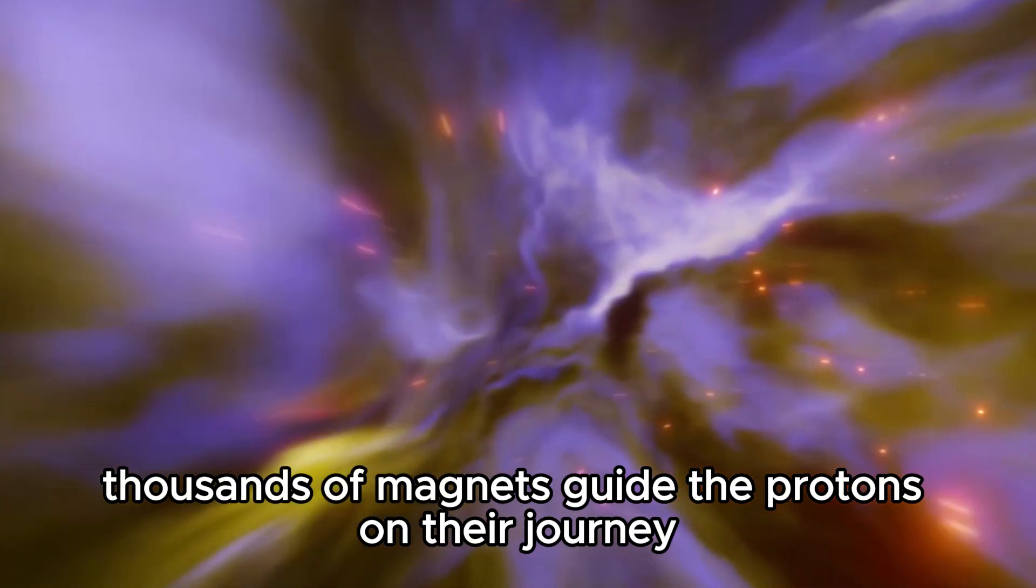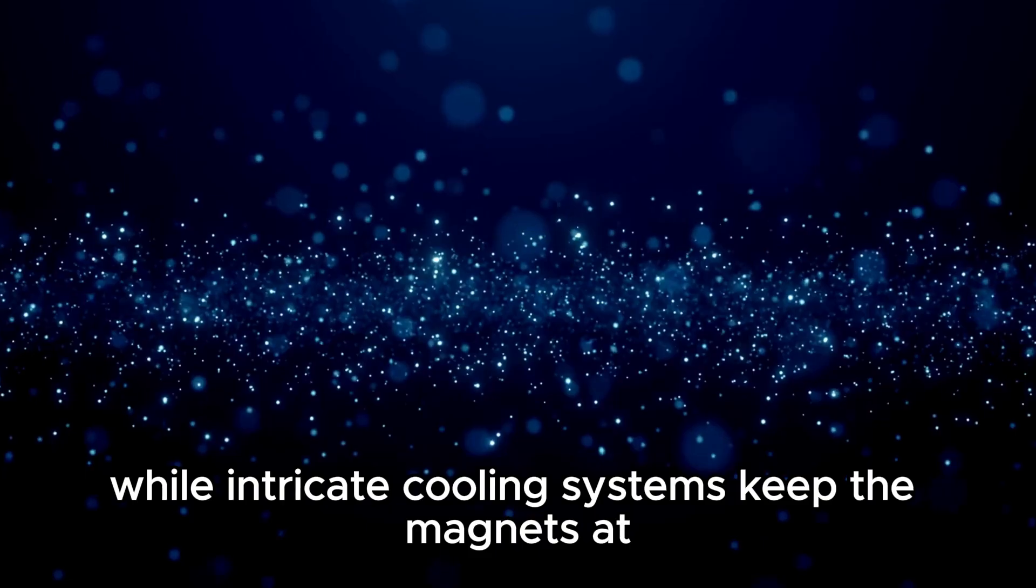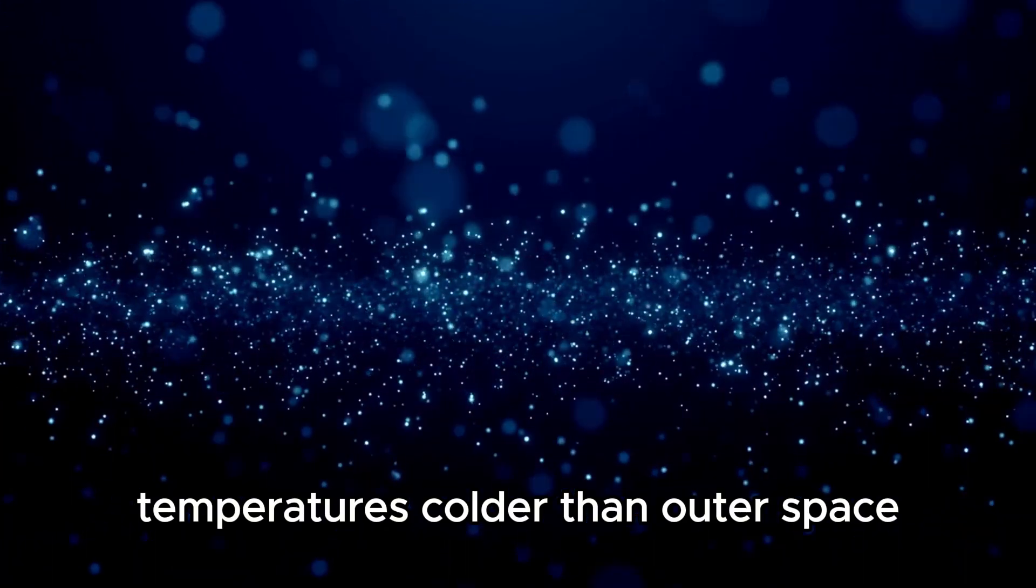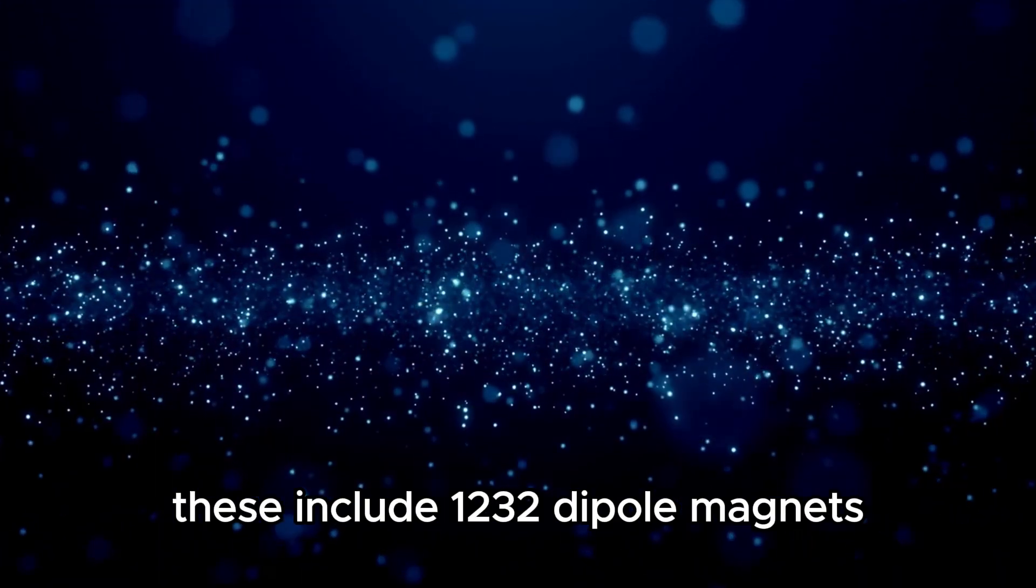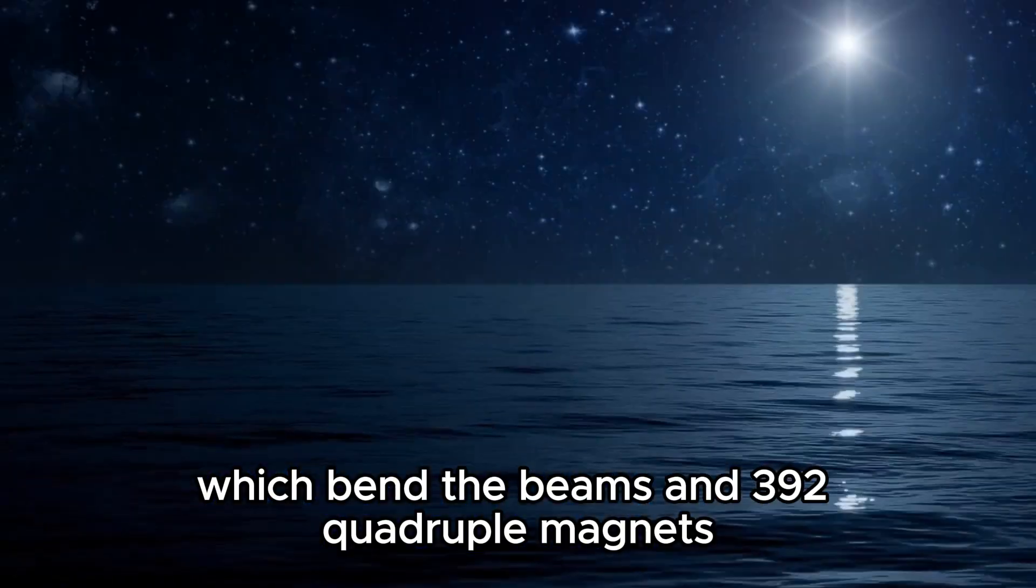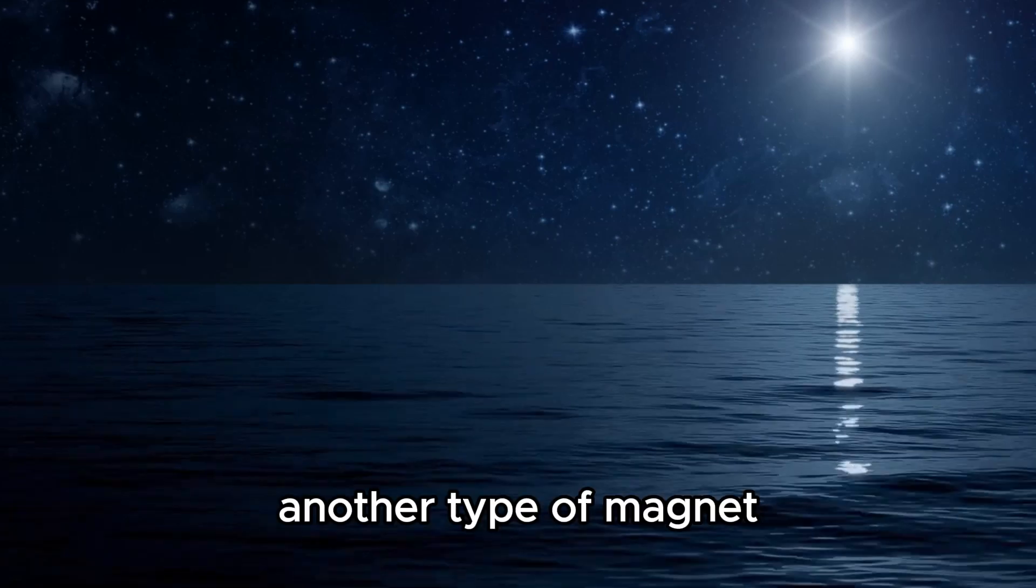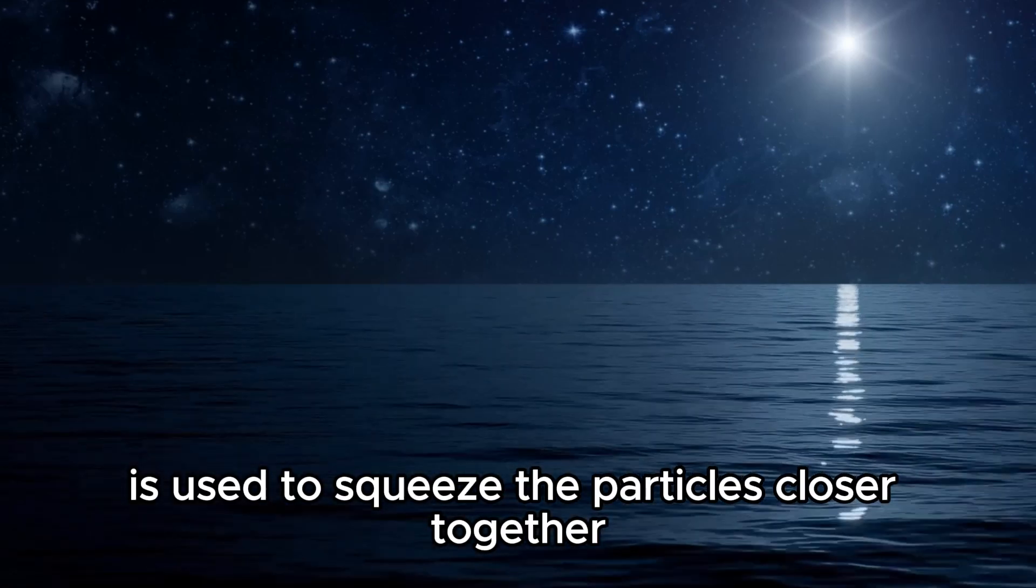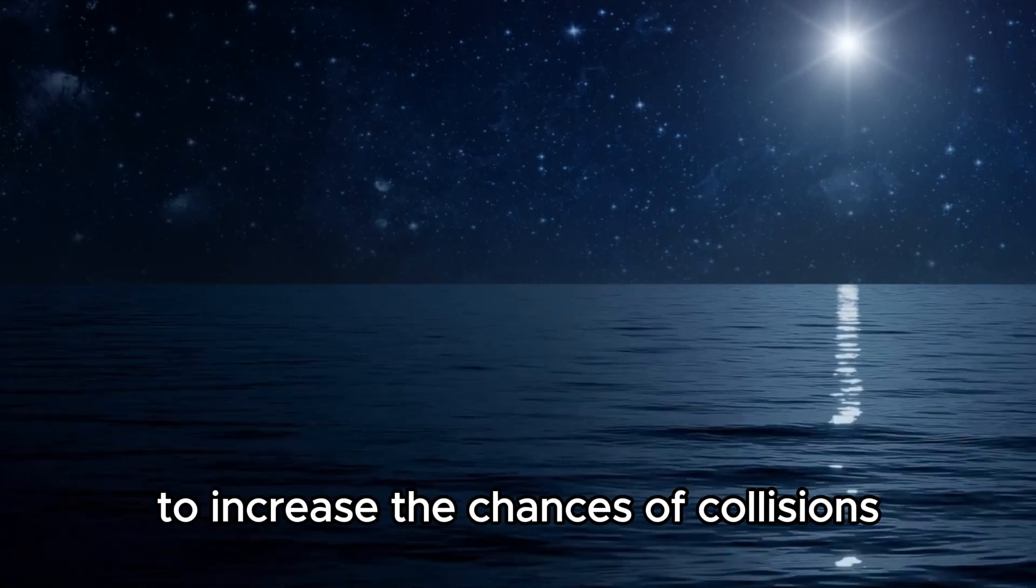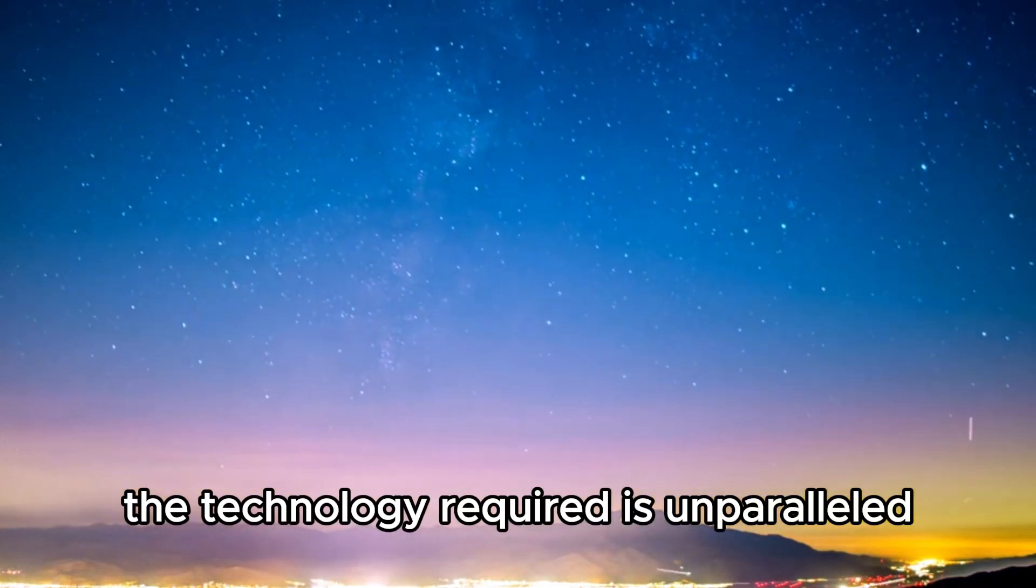Thousands of magnets guide the protons on their journey, while intricate cooling systems keep the magnets at temperatures colder than outer space. These include 1232 dipole magnets which bend the beams, and 392 quadrupole magnets which focus the beams just prior to collision. Another type of magnet is used to squeeze the particles closer together to increase the chances of collisions. The technology required is unparalleled.